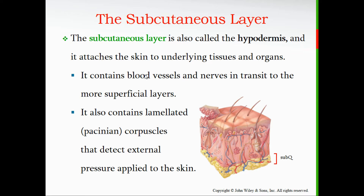Blood vessels and nerves in the subcutaneous layer are in transit to more superficial layers. This layer also contains lamellated, or Pacinian, corpuscles — named for Italian anatomist Filippo Pacini who discovered them. They detect pressure and are very sensitive to vibration. When you run your fingertips across a surface and sense whether it's rough or smooth, that's your Pacinian corpuscles at work.